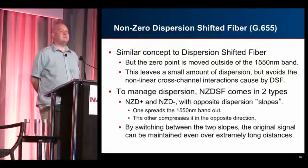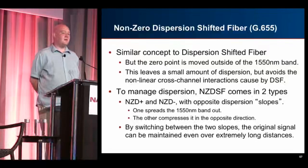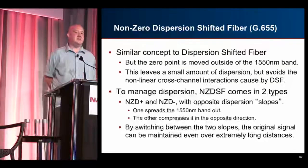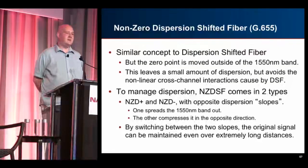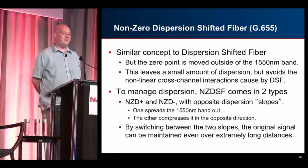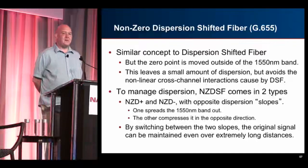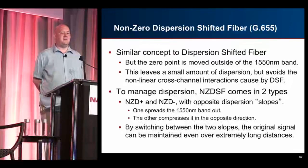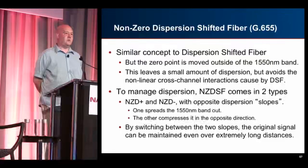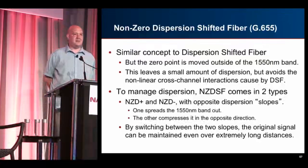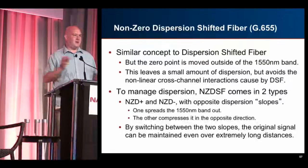The solution was non-zero dispersion-shifted fiber (NZ-DSF). The same concept as DSF, but instead of placing the zero-dispersion point right at 1550nm, they moved it just outside that range. They make two different types, called two different slopes: one where the light spreads out as it goes through, and one where the light converges as it goes through, so you can switch between them.